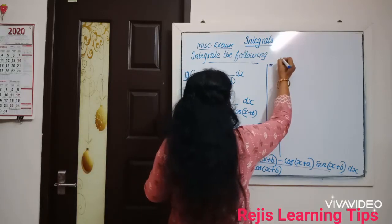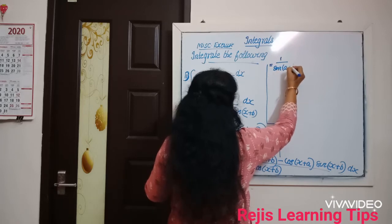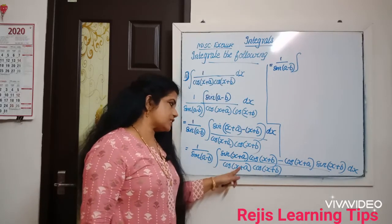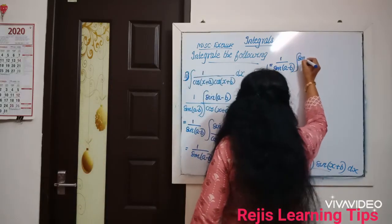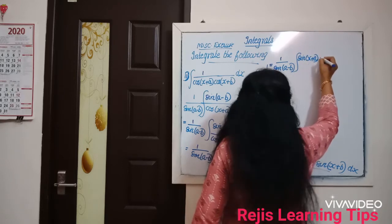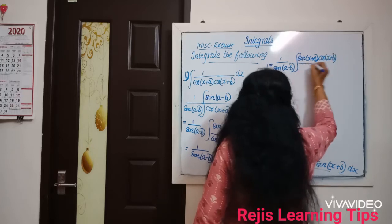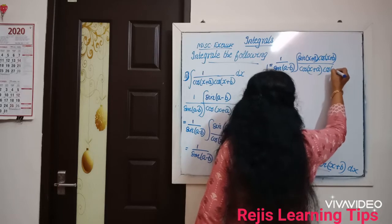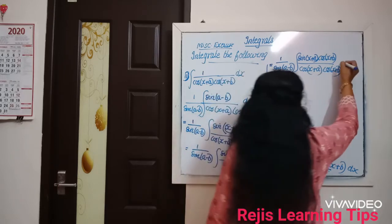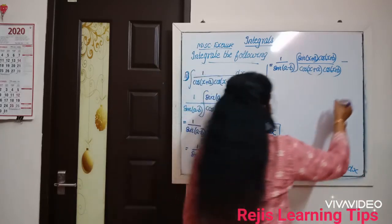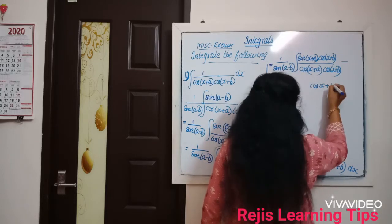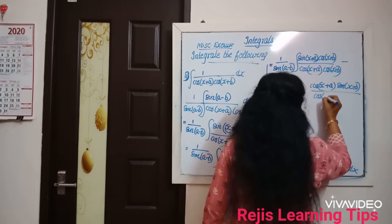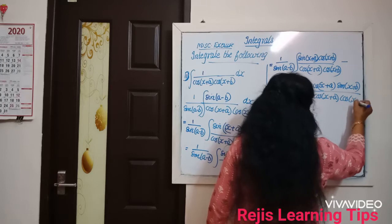This is equal to 1 by sin(a minus b) into the integral of sin(x+a) into cos(x+b) minus cos(x+a) into sin(x+b), divided by cos(x+a) into cos(x+b), then dx.